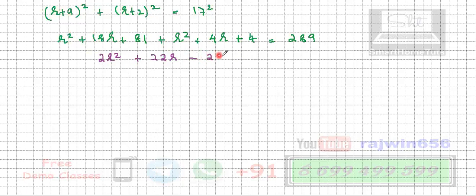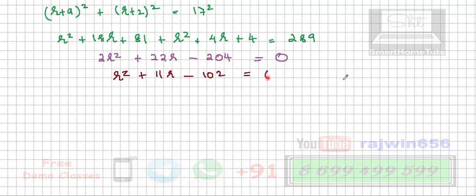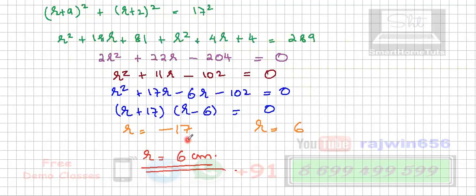We solve the quadratic equation r² + 11r − 102 = 0. One value of r will be positive and the other negative. We reject the negative value since radius must be positive. Solving gives the radius of circle C as 6 centimeters. You can take down the solution, and if you have any questions you can ask.